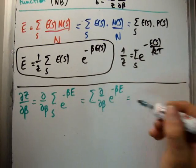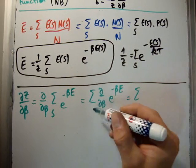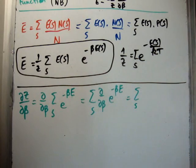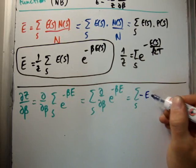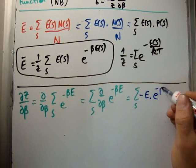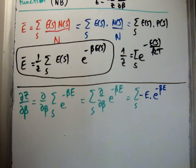And that's, of course, going to be the sum over s of minus E times e to the minus beta E, like that.